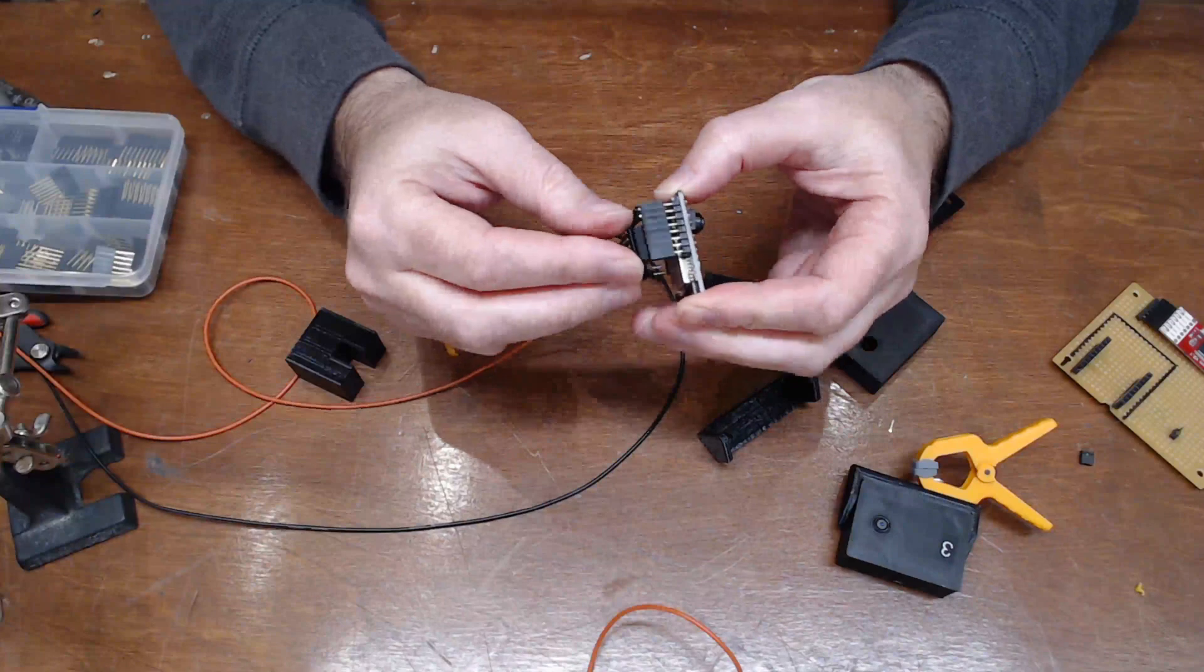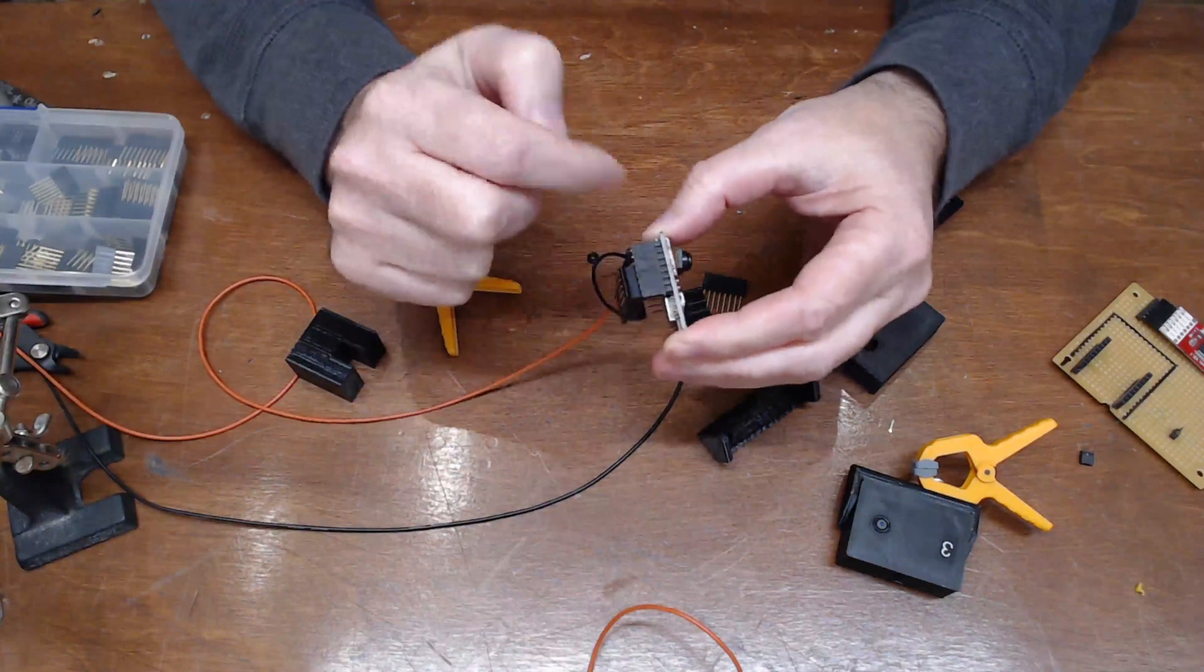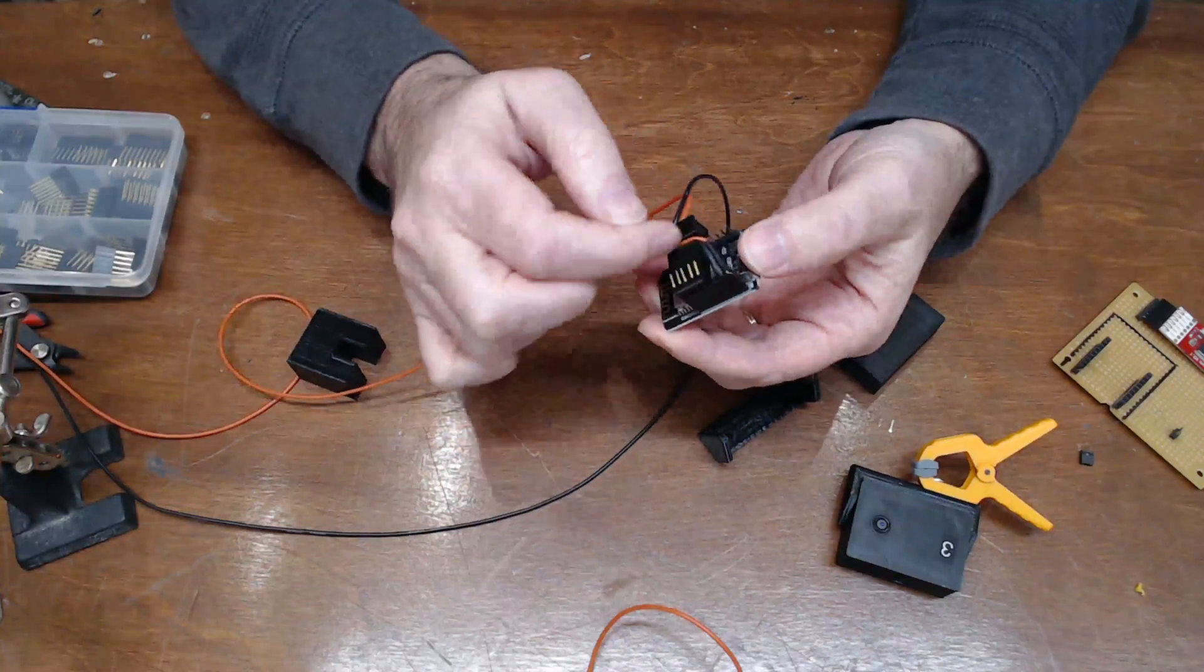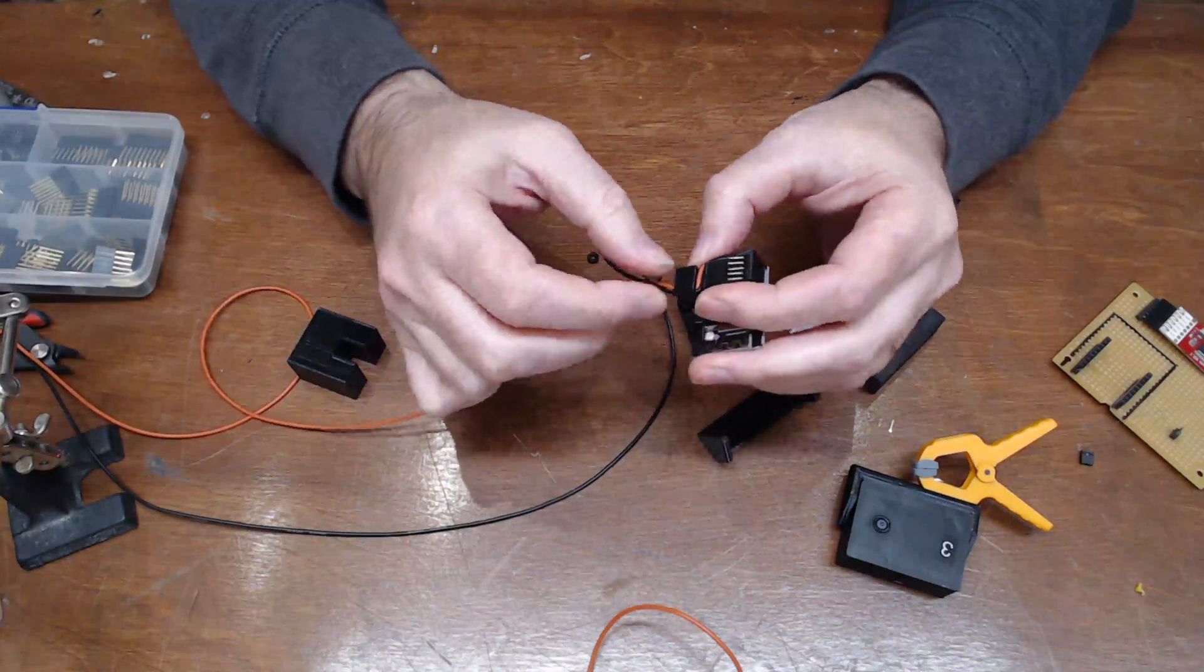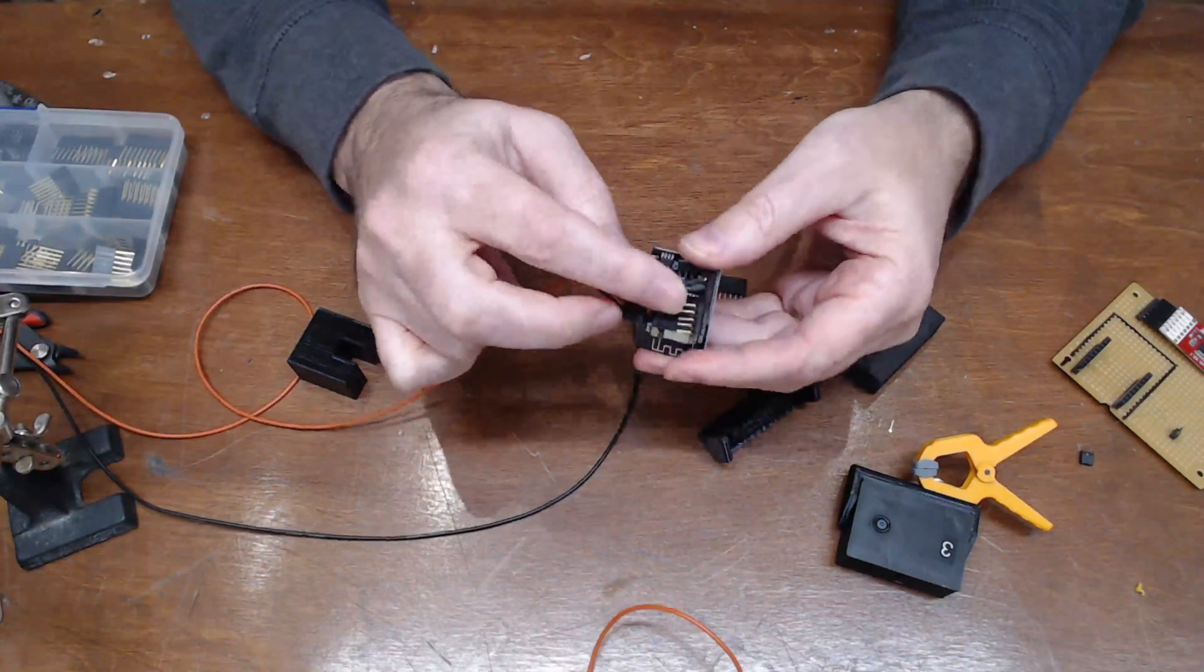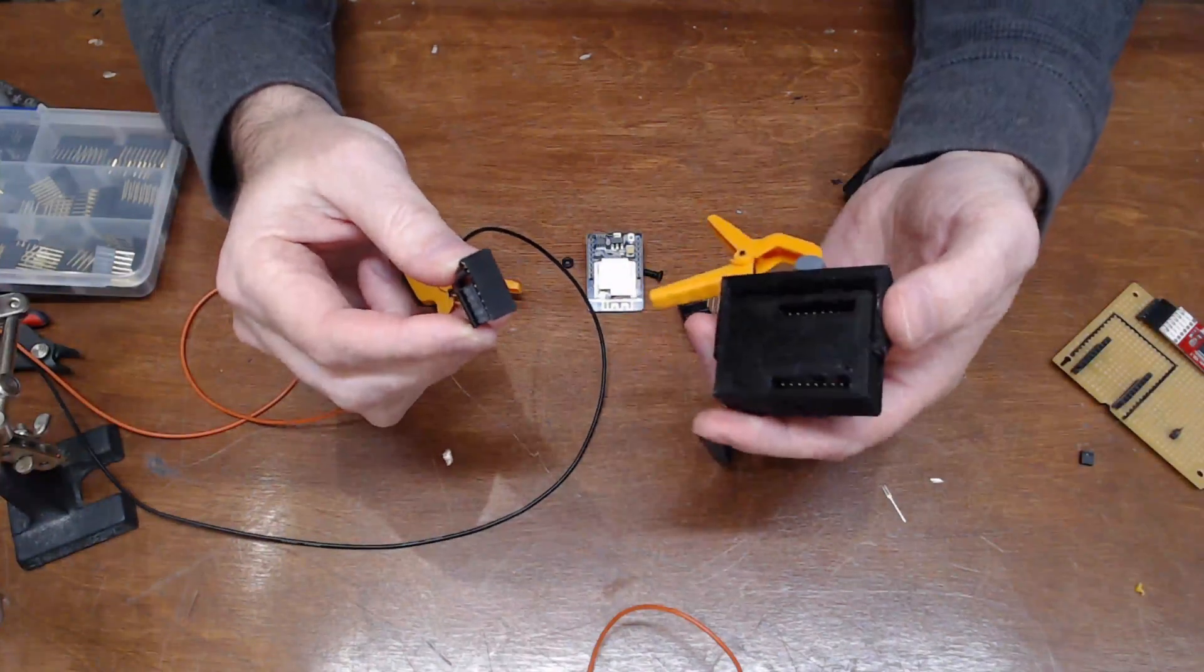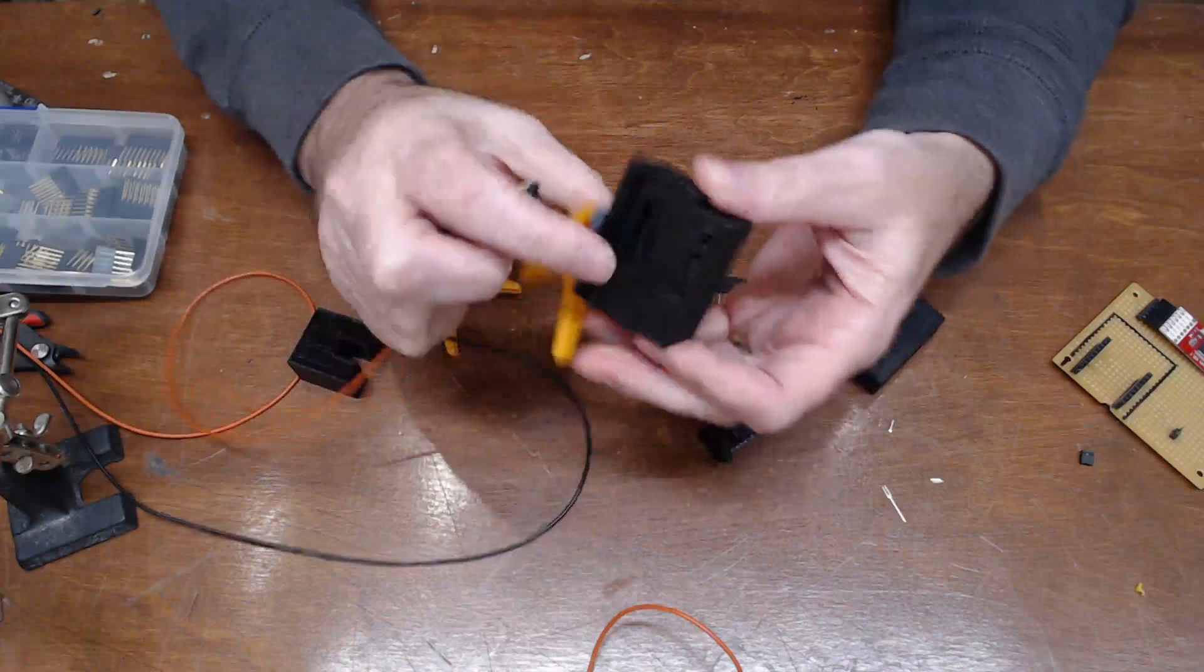So this basically clips onto all eight pins there. The wiring goes through here, and then I made it so that you can affix the wiring to the actual clip itself. The clip itself then would go into the back of the camera like so.